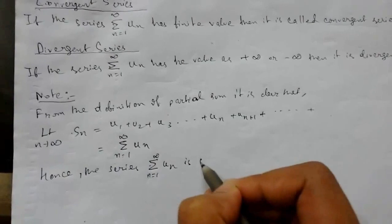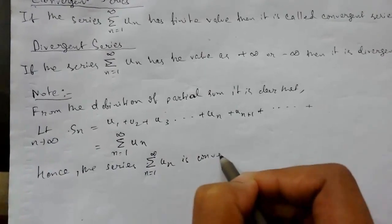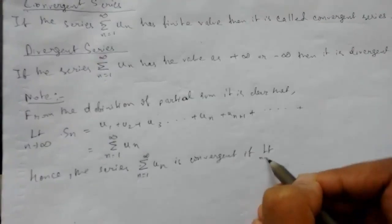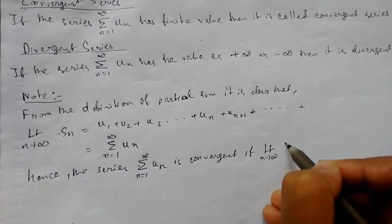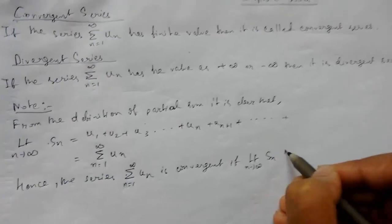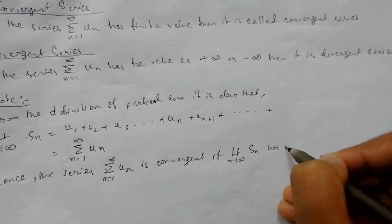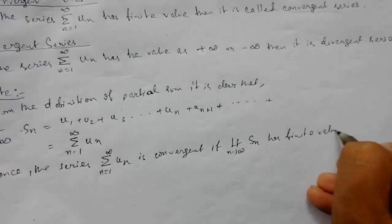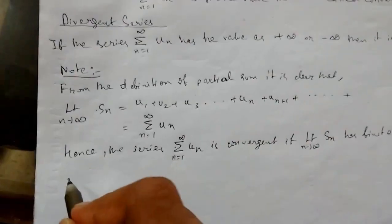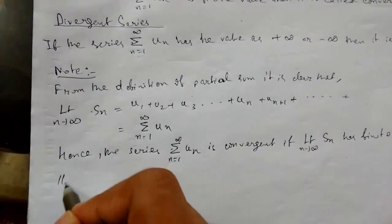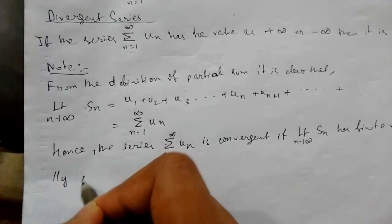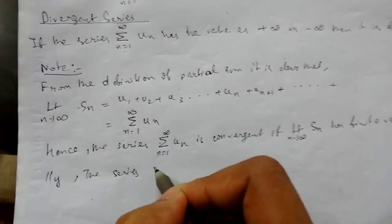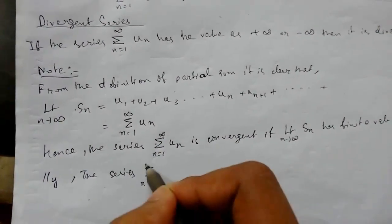Hence, the series summation n from 1 to infinity of u(n) is convergent if the limit as n tends to infinity of S_n has a finite value.